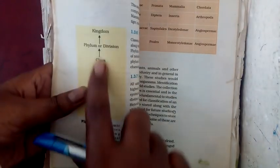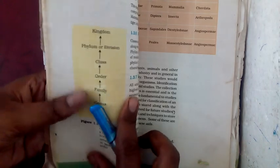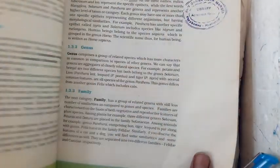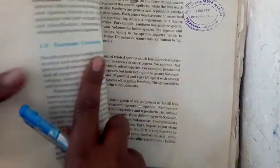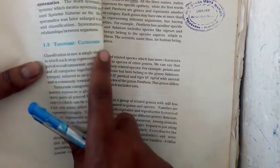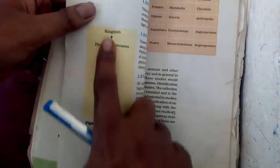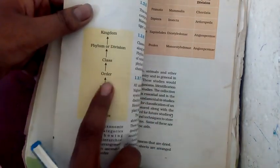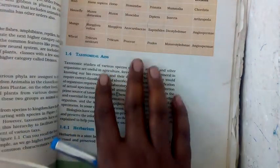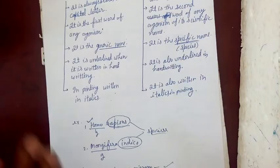Taxonomical hierarchy includes kingdom, phylum or division, class, order, family, genus, and species. These are the taxonomical categories. So thank you for watching this video and bye-bye, take care.